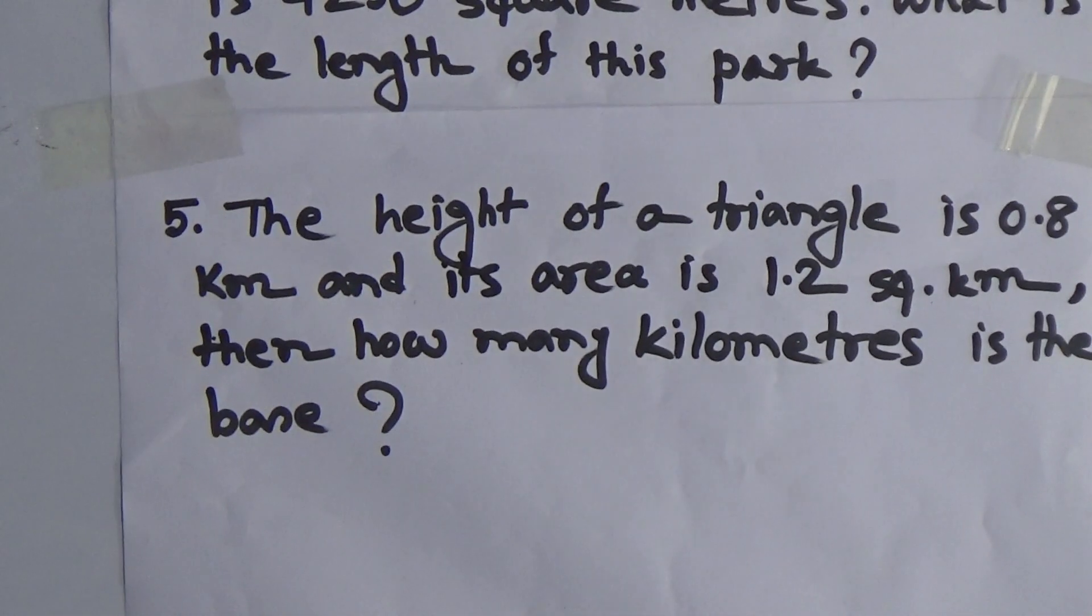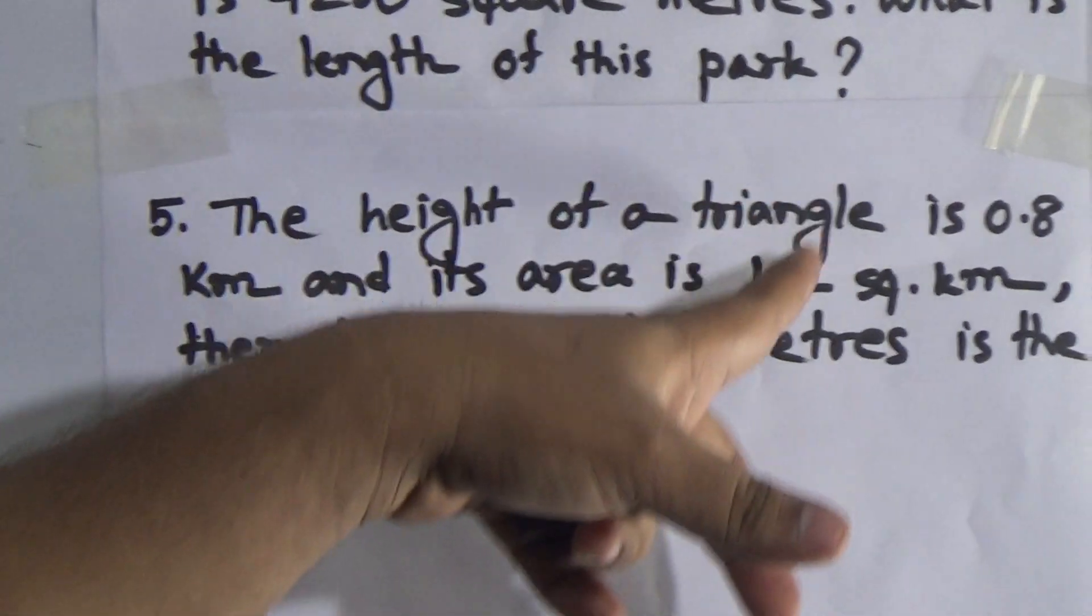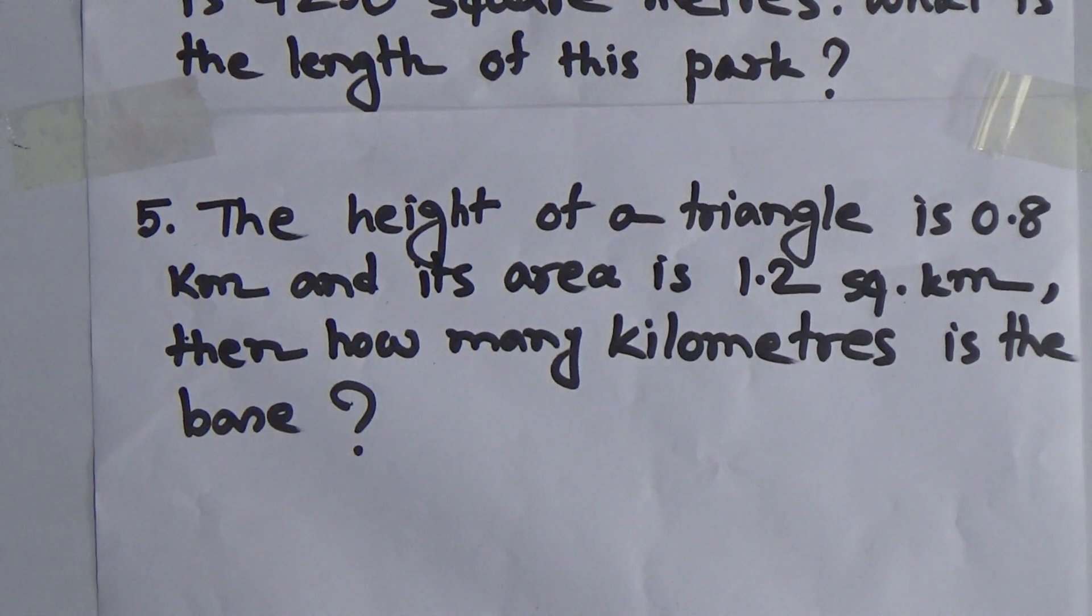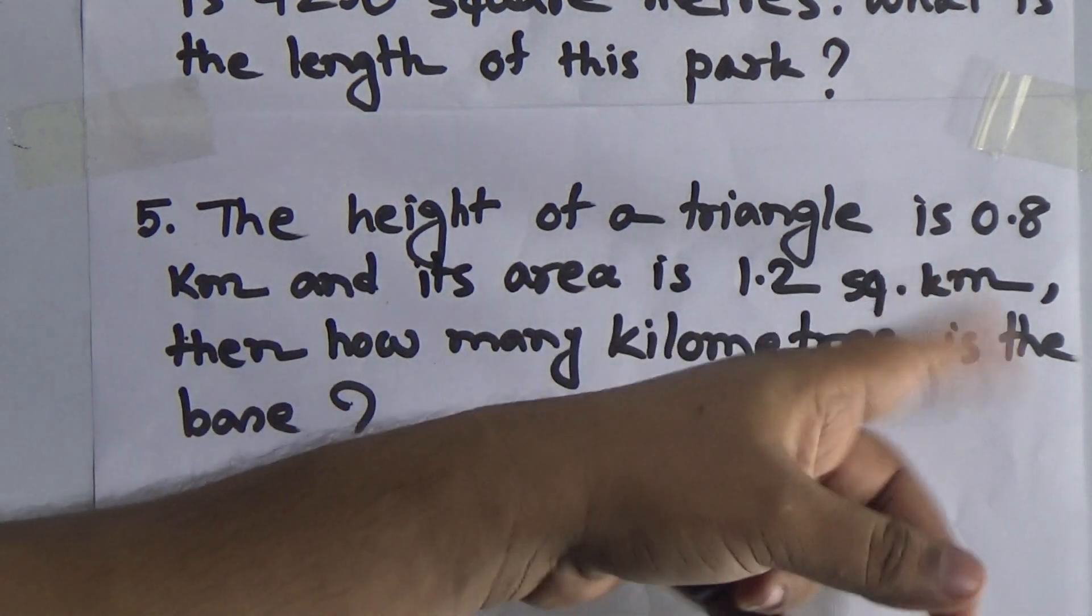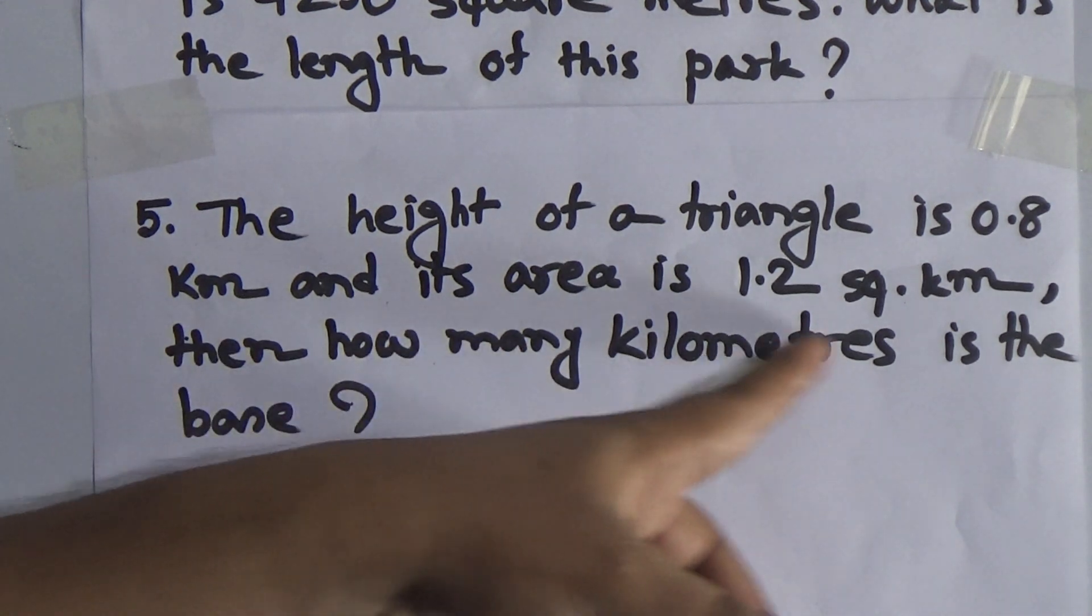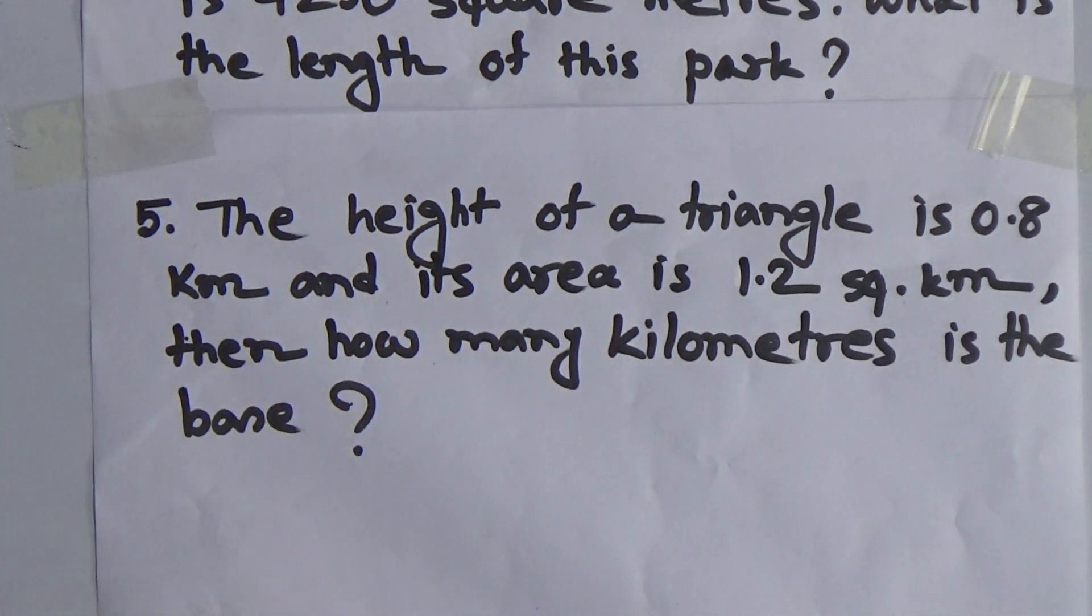At first, we read the question. After that, we make a plan. How to solve this math? The height of a triangle is 0.8 kilometer and its area is 1.2 square kilometer. Then, how many kilometers is the base? My students, do you know what is the formula of area of a triangle? The formula of area of a triangle is base multiplied by height divided by 2.